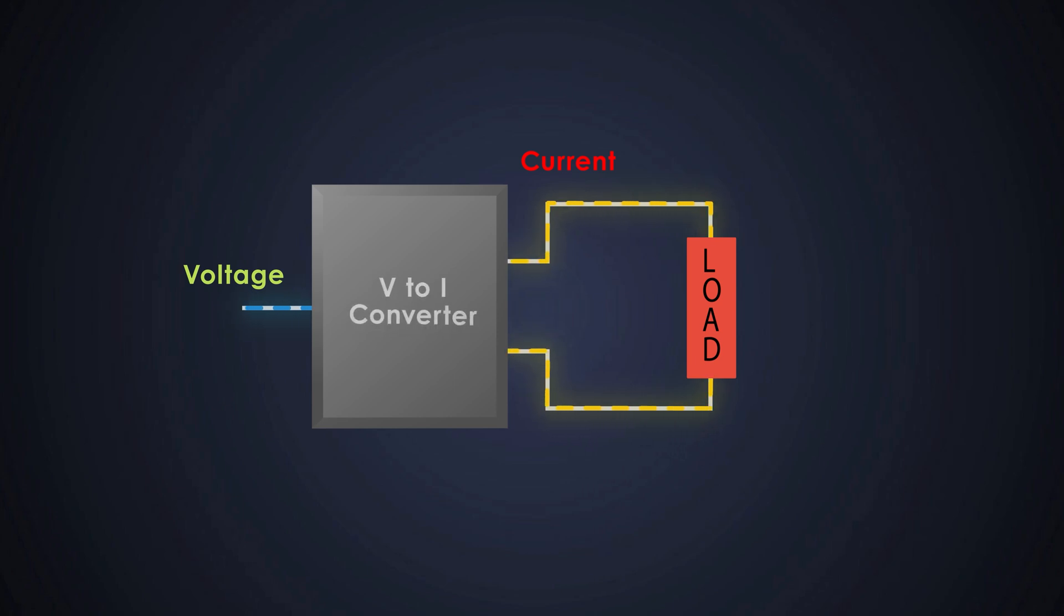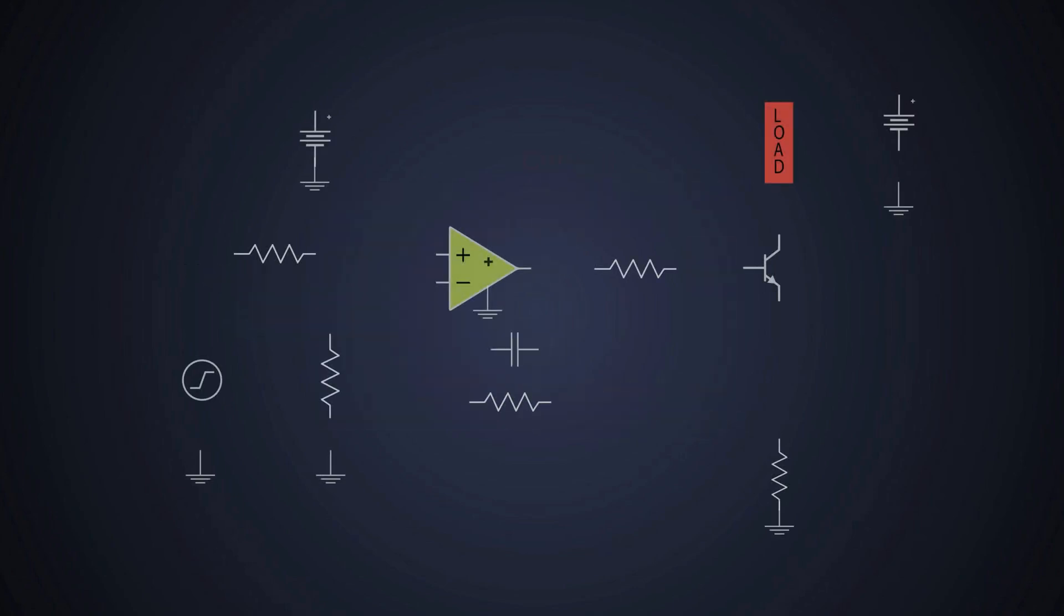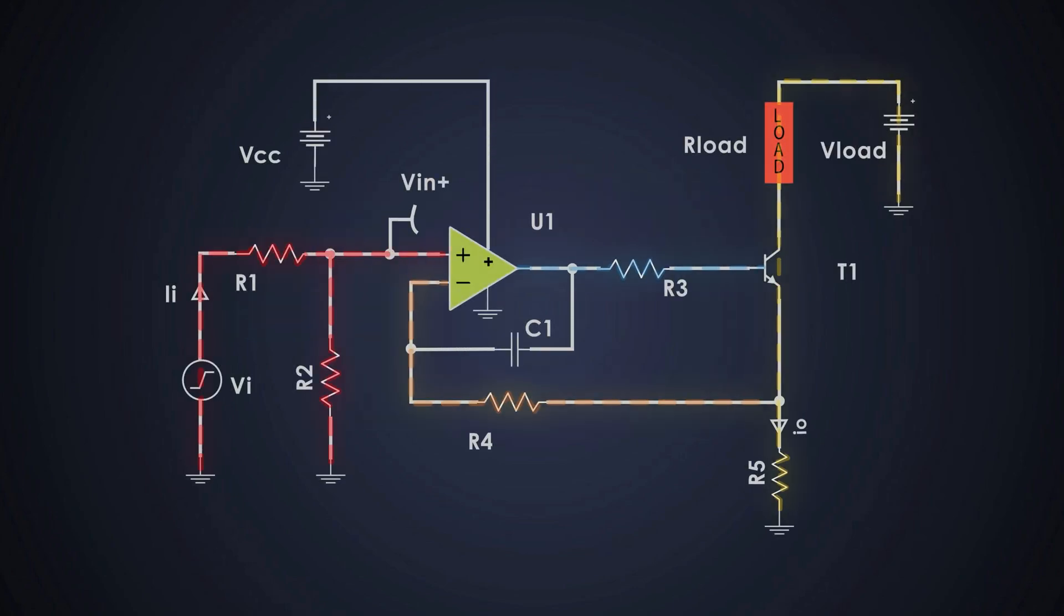Hello everyone, welcome back to Foolish Engineer. Imagine if you control current with pinpoint precision using just a voltage signal and some electronic circuitry. Today we are going to break down one of the coolest yet simpler circuits, a voltage to current converter using a BJT. We'll dive into how it works, every component's role, and see how to design one. So let's start.